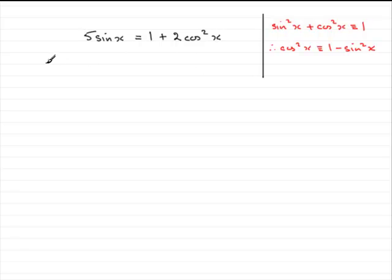And so therefore what we've got is 5 sine x equals 1 plus 2. And in place of cos squared x, we're going to write 1 minus sine squared x.